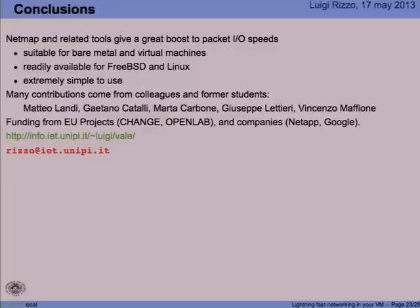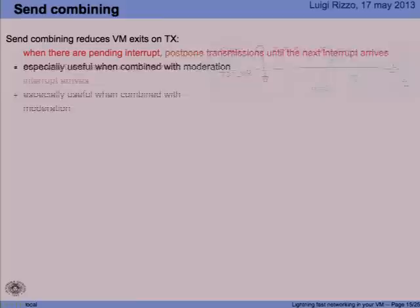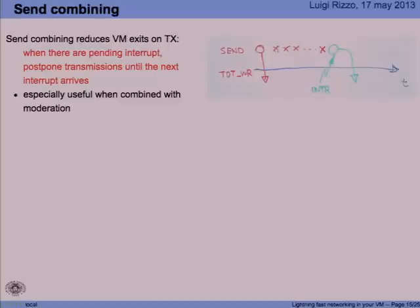[Question: You have a strong focus on bandwidth. Do you have any latency numbers?] I don't have numbers on latency so far. One thing I have to say: in terms of latency, one thing that kills you is the fact that when you transmit a packet, you need to send the packet back to the user space thread in order to communicate with the backend. Linux has some optimization with the vhost thing, so on a VM exit the packet is sent directly to the network stack without going through the user-space process. And that's the way one should do things in order to reduce latency.